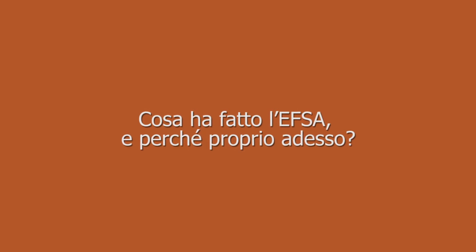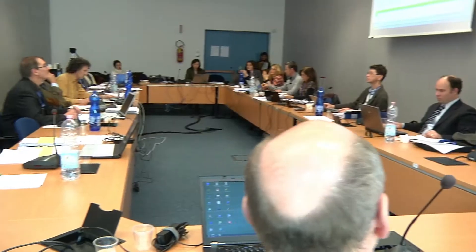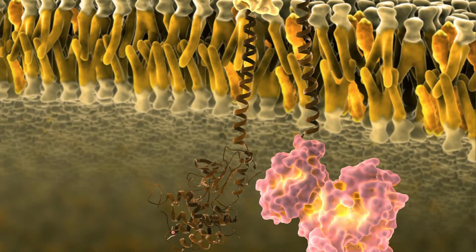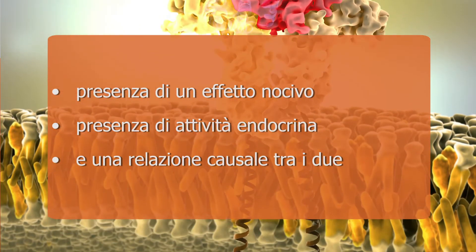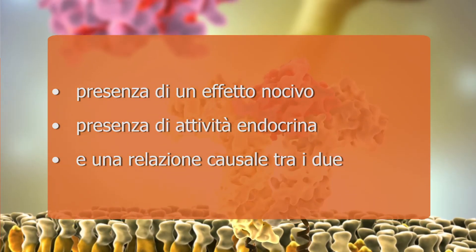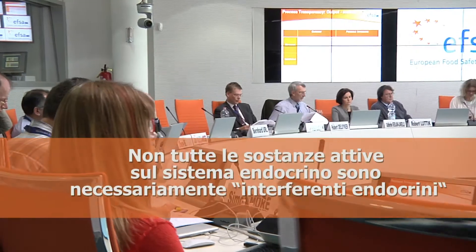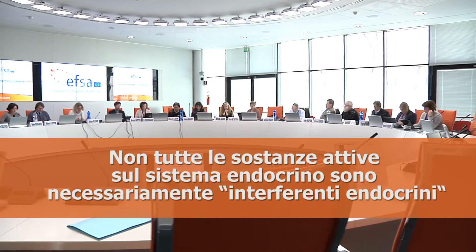EFSA's opinion establishes scientific criteria for identifying the hazards of endocrine active substances and assesses current testing methods for this purpose. We endorse the World Health Organisation definition that an endocrine disruptor is defined by three criteria: the presence of an adverse effect, the presence of endocrine activity, and a causal relationship between the two — in other words, that the endocrine activity leads to an adverse effect. Not all scientists and regulators agree on a distinction between endocrine active substances and endocrine disruptors, but we believe that this is important.